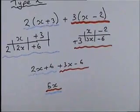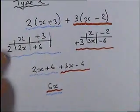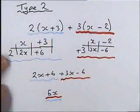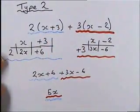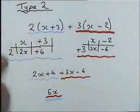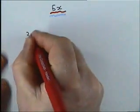That's type two — you'll see it quite a lot particularly on the foundation paper, so be wary of that question. Remember to think of it as two of those plus three of those. Here's another example — try it yourself.